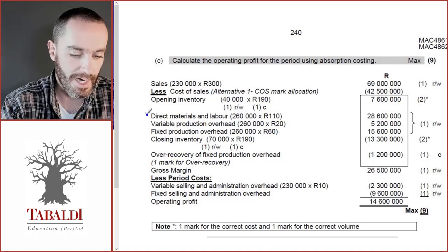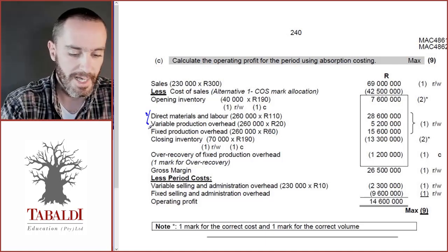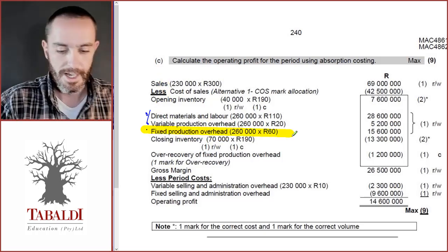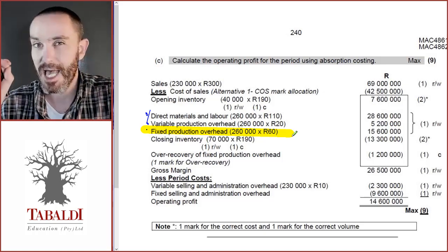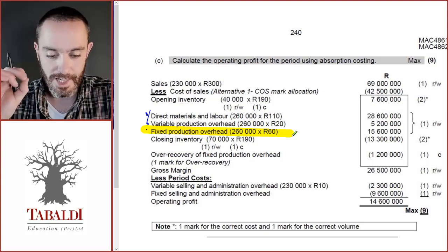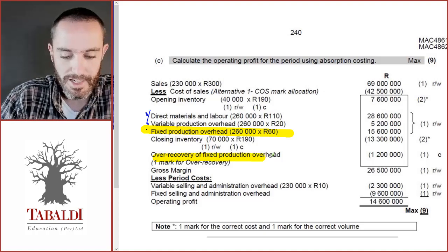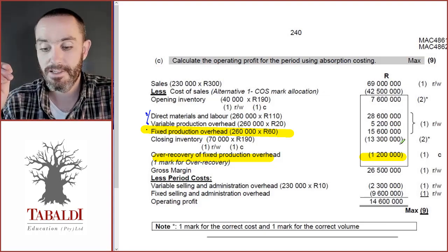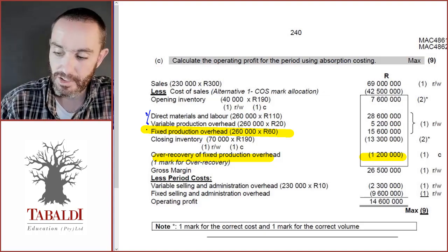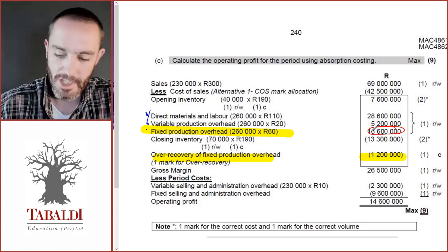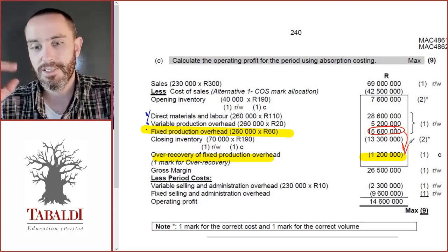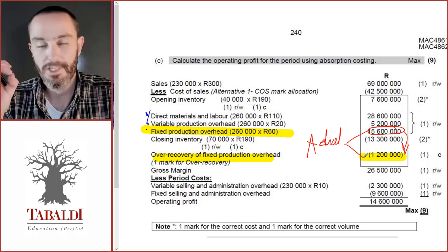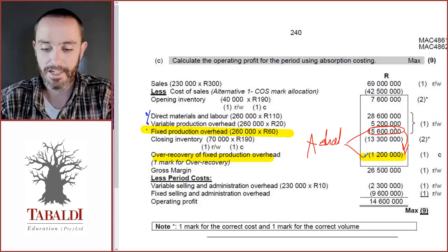Let's look at another example where the production cost was split between direct material and labour, variable production overheads, and fixed production overheads. Remember, the fixed production overheads figure here is the allocated fixed manufacturing overheads — actual units times the predetermined overhead allocation rate. That's why we have an over or under recovery. Here they deducted from cost of sales, meaning we had an over-recovery: actual fixed manufacturing overheads were less than allocated. The actual fixed manufacturing overheads must always equal the allocated fixed overheads combined with the over or under recovery.